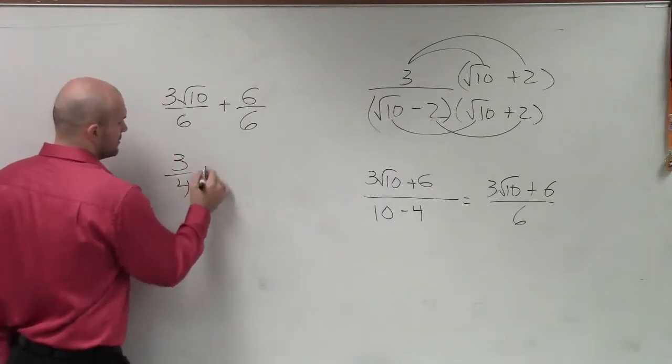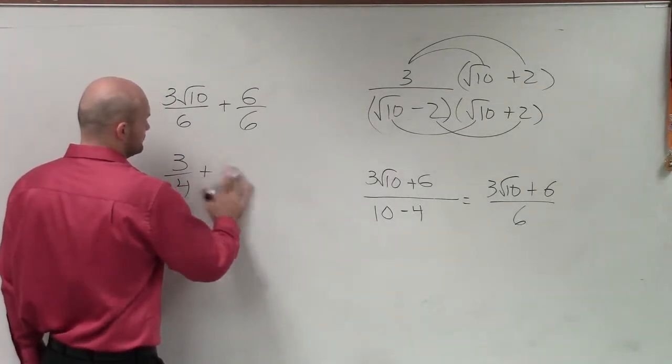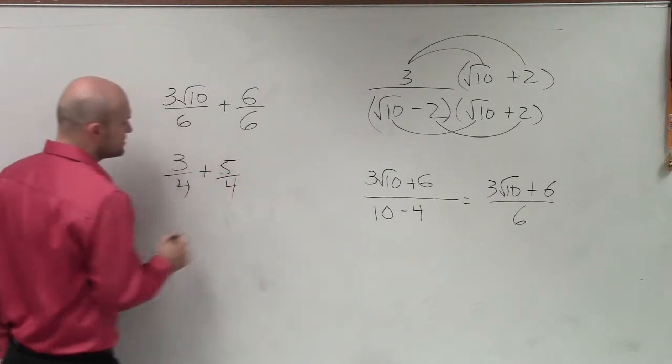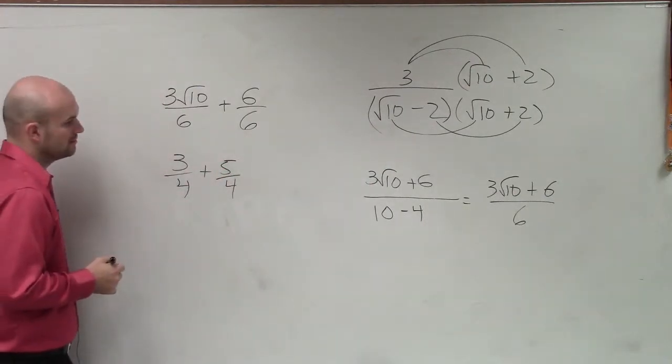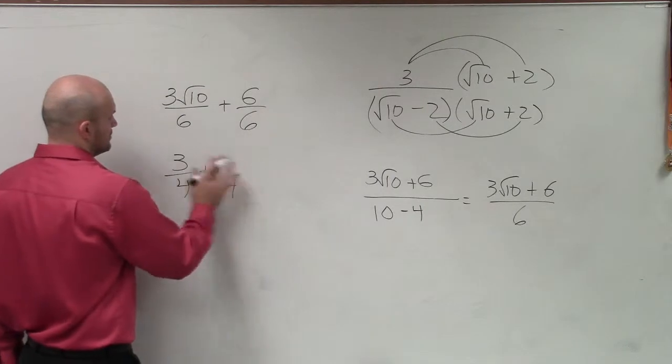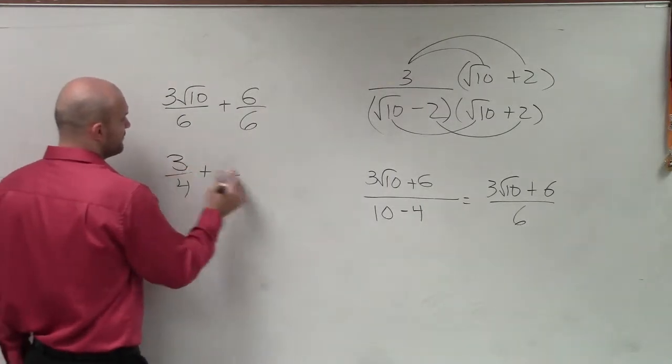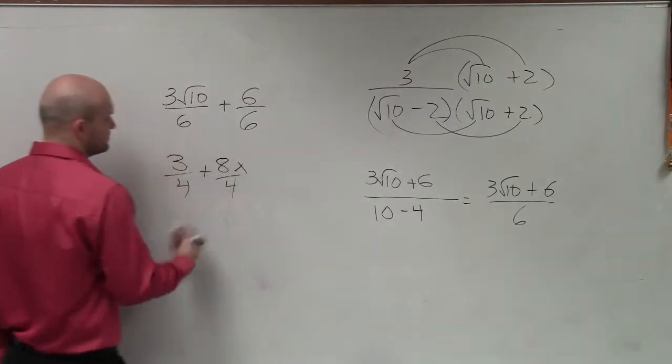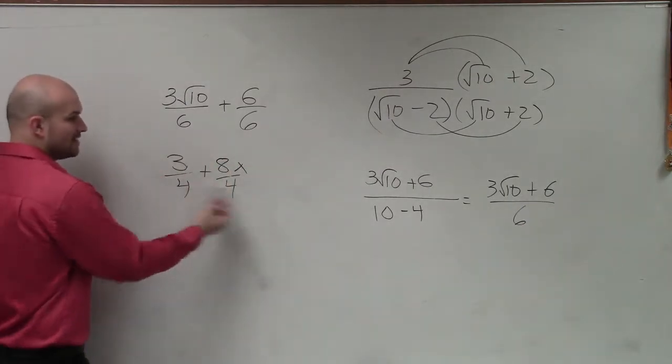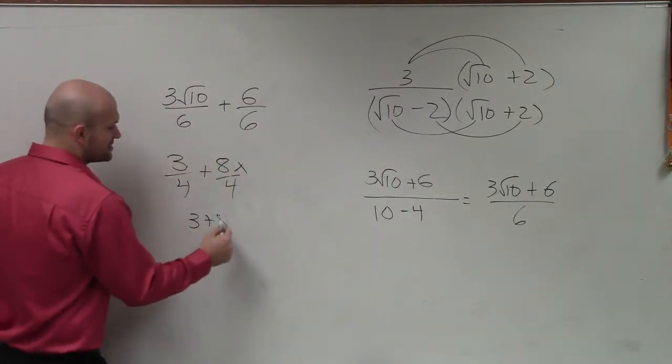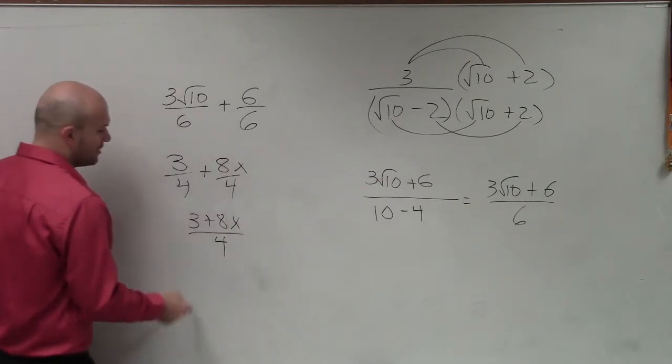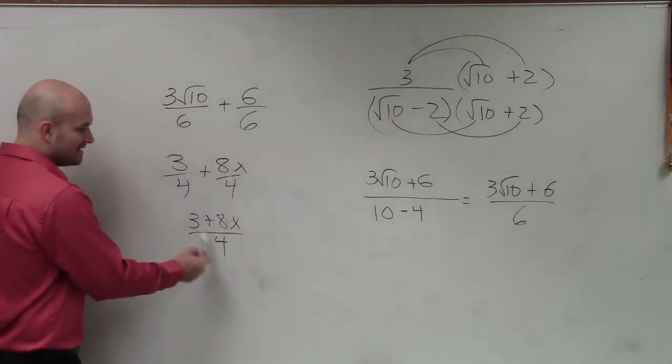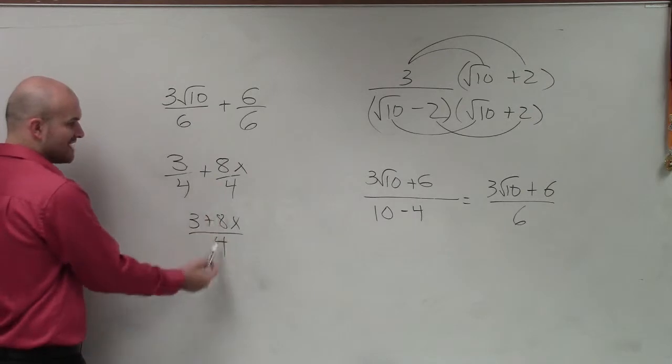You guys say 3 fourths plus 5 fourths? All right, let's do it this way. 3 fourths plus 8x if you did something like this, right? If you were to add these up, you'd do 3 plus 8x divided by 4. Well, the 4 just doesn't divide into 8. It divides into both of those, right? Because that's where it came from.